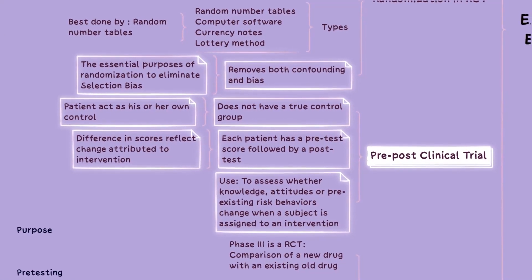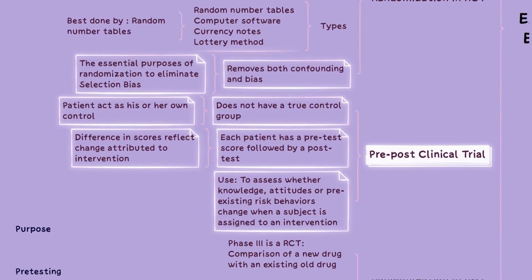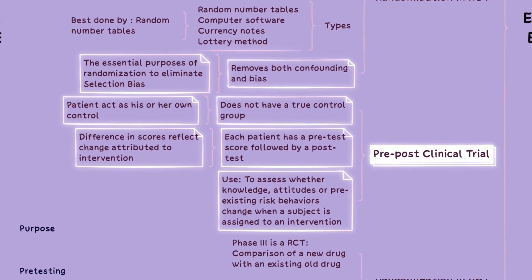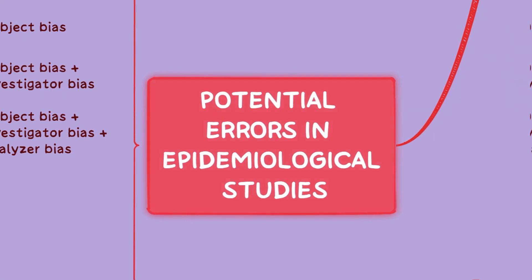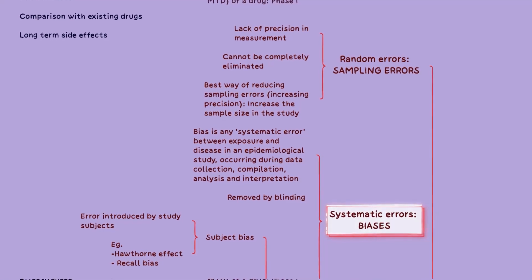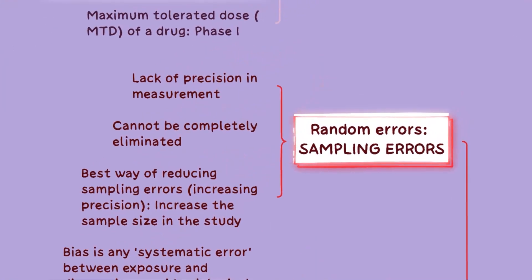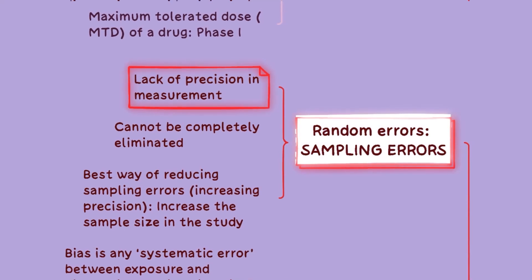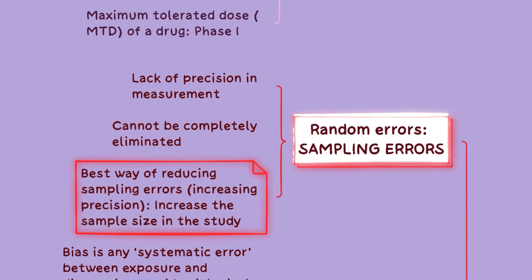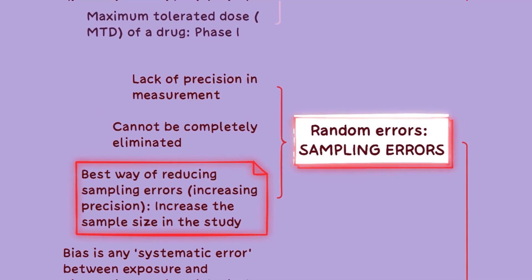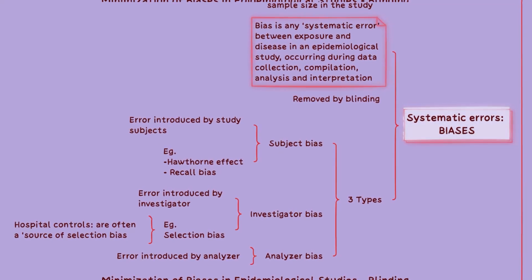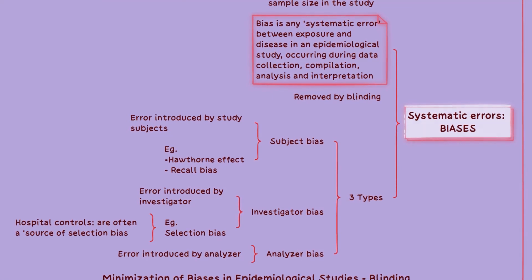All these studies are multi-step processes, so there is scope for error in quite a few places. Potential errors in epidemiological studies can be random errors or systematic errors. Random errors are mostly due to lack of precision in measurement due to random variation — they cannot be completely eliminated but can be reduced by increasing the sample size. Systematic errors, or biases, occur during data collection, compilation, analysis, and interpretation.